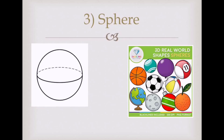Hello, Grade 7. Today we are going to talk about the volume of a sphere. This is the shape of a sphere which exists in real life — a football, balloon, orange, Christmas ball, and so on. And this is the geometric figure of a sphere.